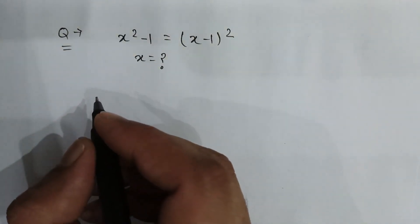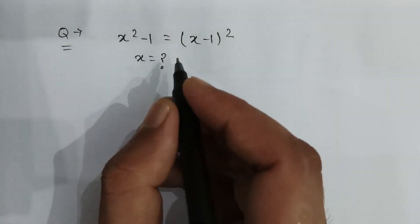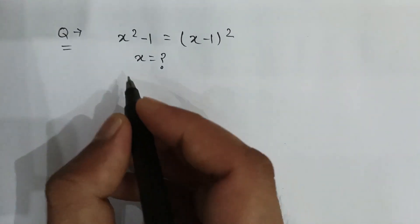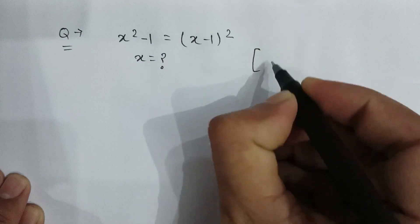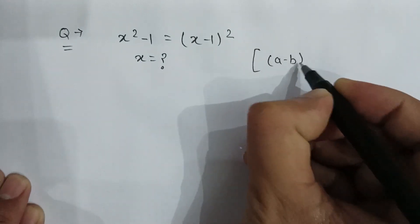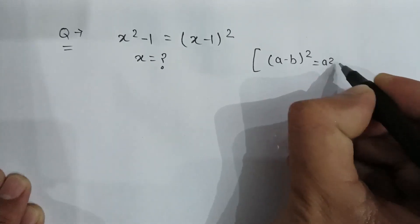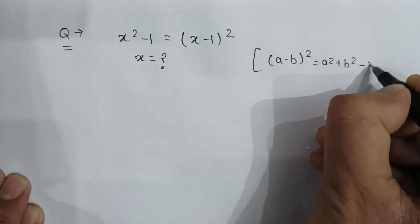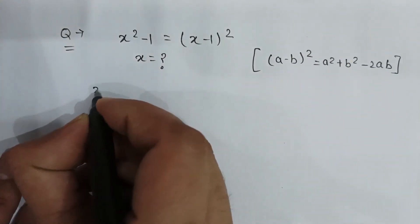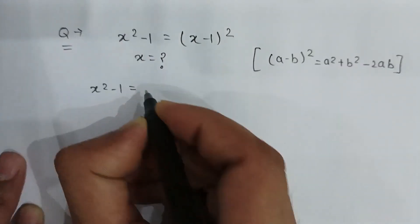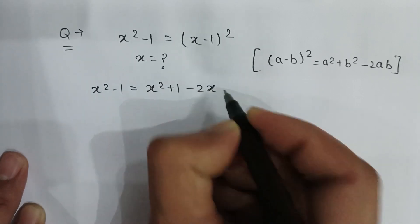The problem is x squared minus 1 is equal to (x minus 1) whole square. Find the value of x. As we know, (a minus b) whole square can be rewritten as a squared plus b squared minus 2ab. So x squared minus 1 is equal to x squared plus 1 minus 2x.